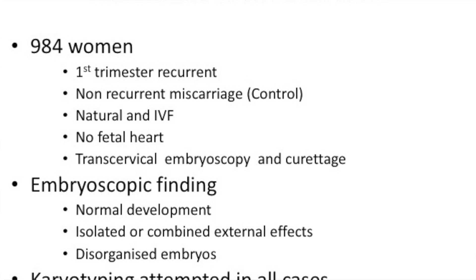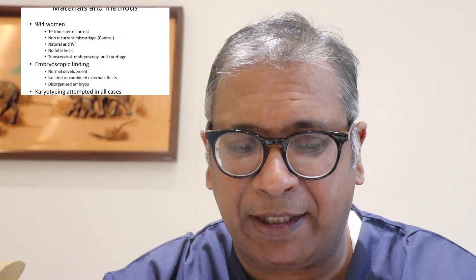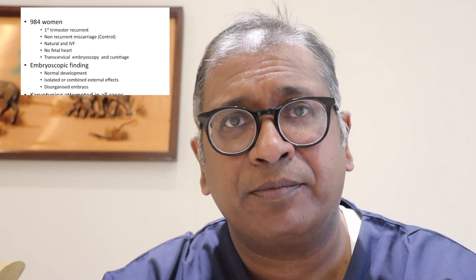984 women with first trimester recurrent pregnancy loss. Controls were non-recurrent pregnancy loss, natural as well as IVF, with evidence of no fetal heart. A trans-cervical embryoscopy — that's having a look at the embryos — and a curettage were performed. Embryoscopic findings looked at normal development, isolated or combined external defects and disorganized embryos, and karyotyping was done on all the cases.